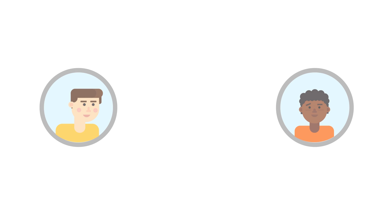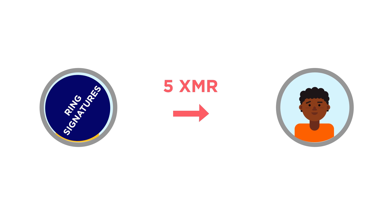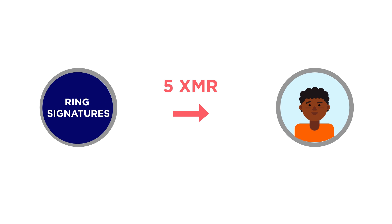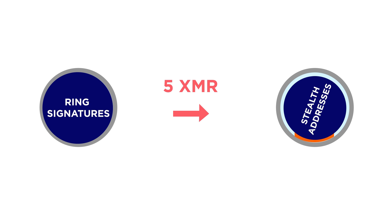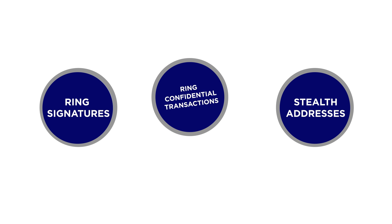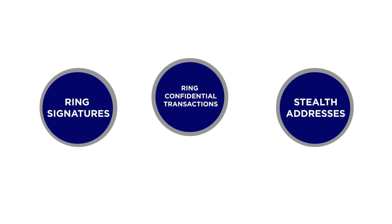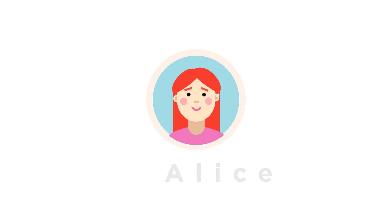In this video, we will focus on an anonymity technology called Kovri. Up to now, we have covered how Monero obfuscates information stored on the blockchain: ring signatures obscure the sender, stealth addresses prevent outside observers from knowing the receiving address, and Ring CT hides the amount of Monero that's transmitted.